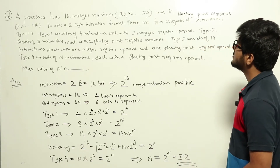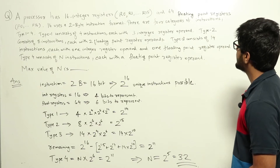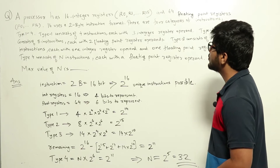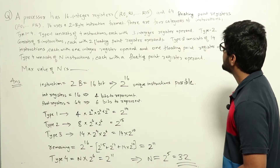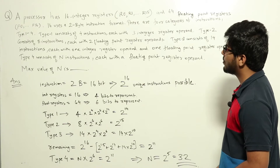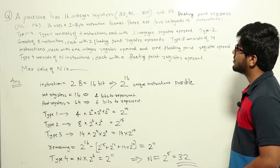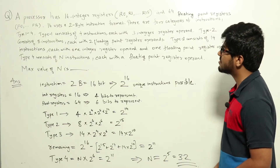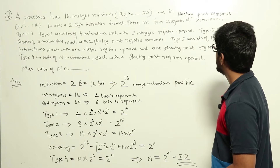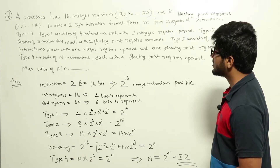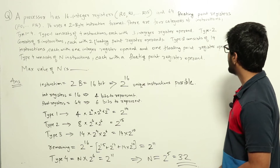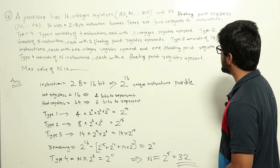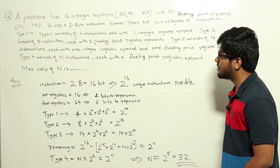A processor has 16 integer registers R0 to R15 and 64 floating point registers F0 to F63. It uses a 2 byte instruction format. There are four categories of instructions, type 1 to 4. Type 1 has four instructions each with three integer register operands. Type 2 has eight instructions each with two floating point register operands. Type 3 has fourteen instructions each with one integer and one floating point register operand. Type 4 has N instructions each with one floating point register operand. The maximum value of N is?